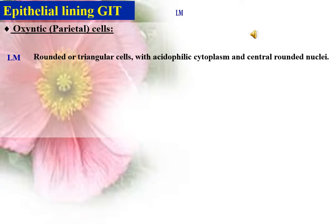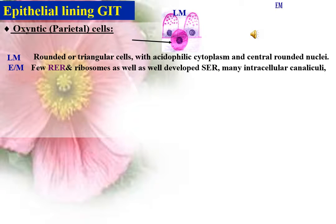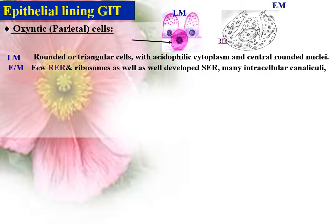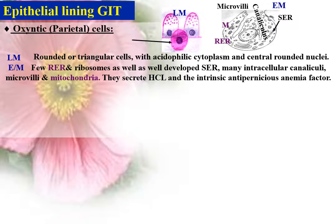Other cells present in the gastrointestinal tract are oxyntic or parietal cells. They are rounded or triangular cells with acidophilic cytoplasm and a central rounded nucleus. They contain few rough endoplasmic reticulum and ribosomes, as well as well-developed smooth endoplasmic reticulum, many intracellular canaliculi with numerous long microvilli on the surface, and numerous mitochondria. They secrete HCl and the intrinsic anti-pernicious anemia factor.